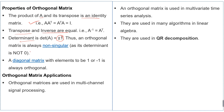Its determinant is not zero. A diagonal matrix with elements 1 or minus 1 is always an orthogonal matrix. For applications, orthogonal matrices are used in multi-channel signal processing, in multivariate time series analysis, in many algorithms in linear algebra, and in QR decomposition.